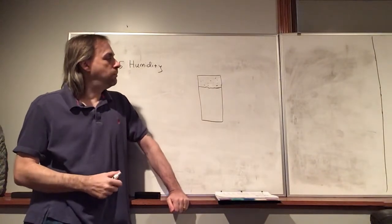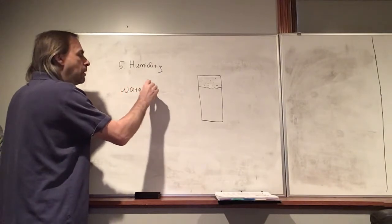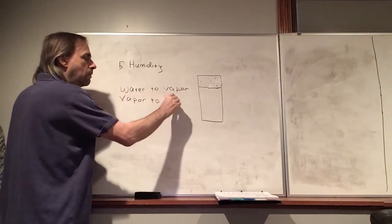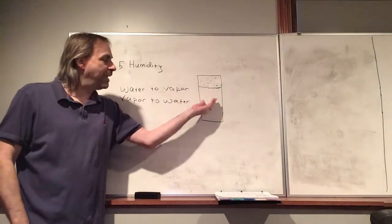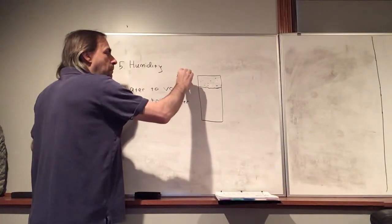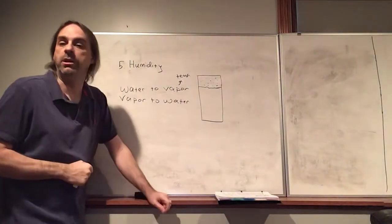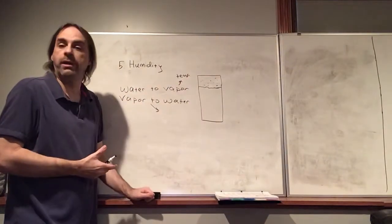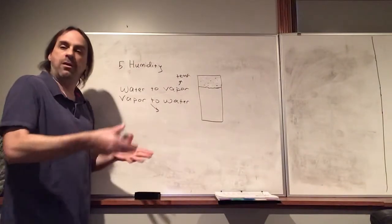We've got gas going from water to vapor, and we also have vapor going back to water. Both of these are happening simultaneously. The water-to-vapor rate — the rate that molecules are leaving this volume of water and going into the vapor state — depends on the temperature of the water. The hotter it is, the greater this rate is going to be. The vapor-to-water rate depends on how much vapor there is. If you have more molecules here, there are going to be more collisions with the liquid water, and they'll be reabsorbed at a higher rate.